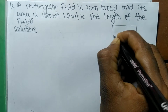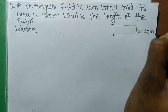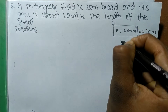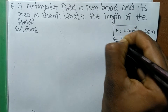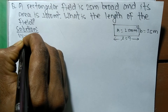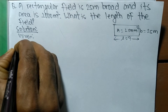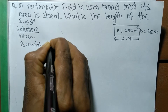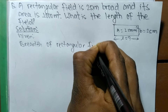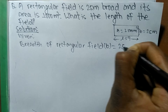Here is the rectangular shaped field. Its breadth is given as 25 meters and its area is 1000 meter square. We have to find out its length. To solve it, first we write what is given — breadth of the rectangular field, which we denote by b, is equal to 25 meters.